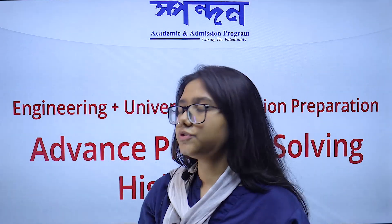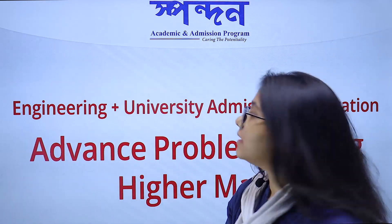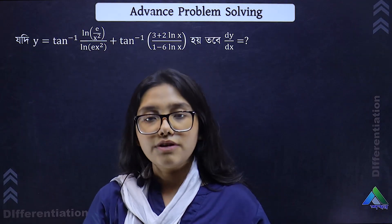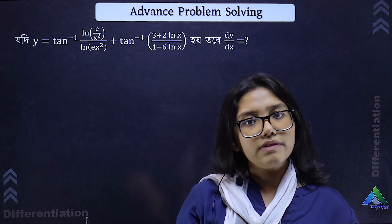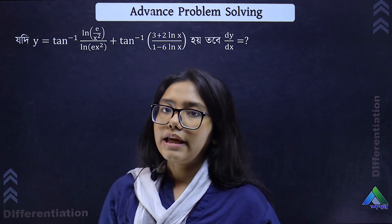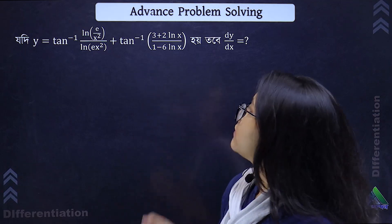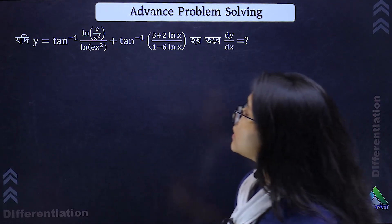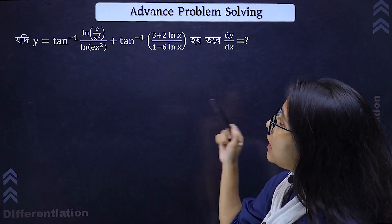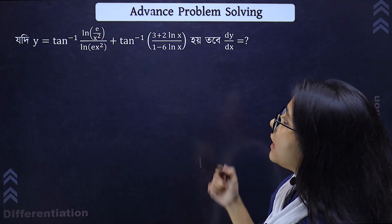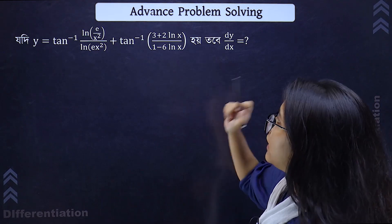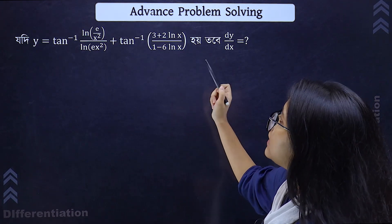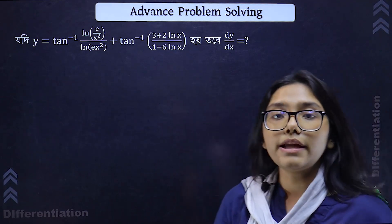We have a good differentiation problem. The question is: y equals tan inverse of (ln(e/x²) divided by ln(e·x²)) plus tan inverse of (3 plus 2 ln x) divided by (1 minus 6 ln x). Find dy/dx.